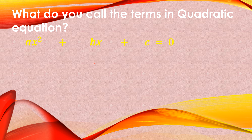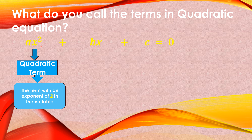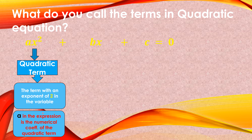Let us familiarize — what do you call the terms in a quadratic equation? The first one is AX squared, which is called the quadratic term. It is where the exponent of 2 is seen. So the quadratic term is the term with an exponent of 2 in the variable. And A is the numerical coefficient of the quadratic term.